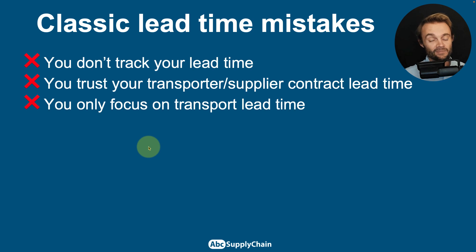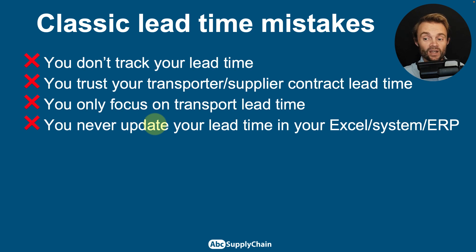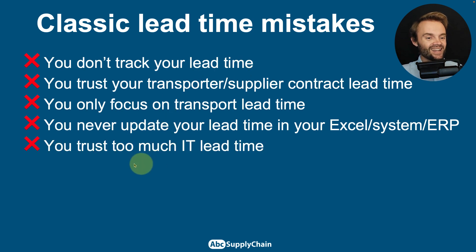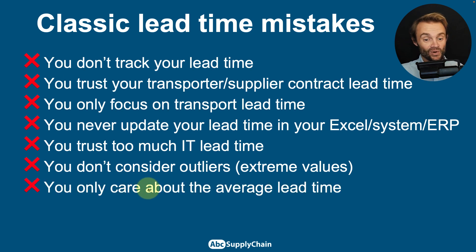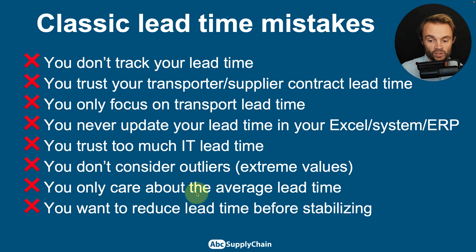Third, you only focus on your transport lead time — lead time is not only about transportation. Fourth, you never update your lead time in your Excel or ERP; there may be 25 days in SAP and nobody knows who set it. Fifth, you trust too much your IT lead time — the system may say 20 days but that may not reflect reality. Sixth, you don't consider outliers and extreme values. Seventh, you only care about the average lead time. Eighth, you focus too much on average lead time before even trying to stabilize the metric.